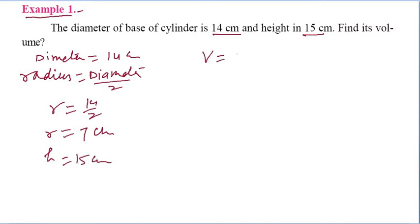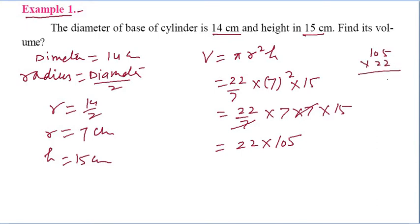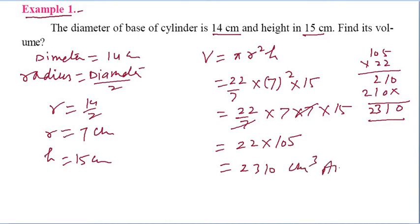Volume = pi r square h. Put the value: 22/7 × 7² × 15 = 22/7 × 7 × 7 × 15. Cancel one 7 with the denominator. So we get 22 × 7 × 15 = 22 × 105. Multiplying: 2310 cm cube. So the answer is 2310 cm³.